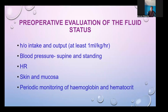For pre-operative evaluation, always take into account the history of input and urinary output, and blood pressure. When fluid deficit reaches 6 to 8% of body weight, systolic blood pressure falls more than 20 mmHg from supine to standing, with a compensatory heart rate increase. If this doesn't happen, the patient may have autonomic dysfunction or be on antihypertensive treatment. Dry skin and mucous membranes indicate dehydration. Monitor hemoglobin and hematocrit.